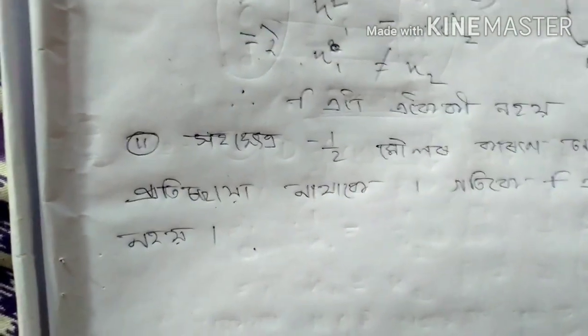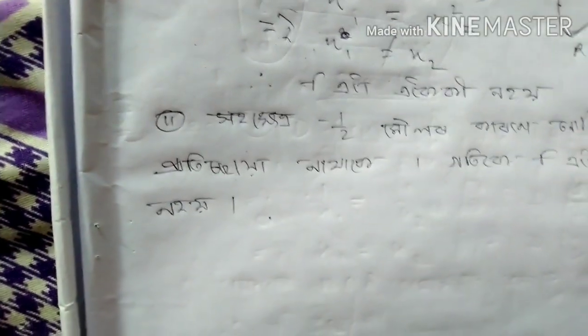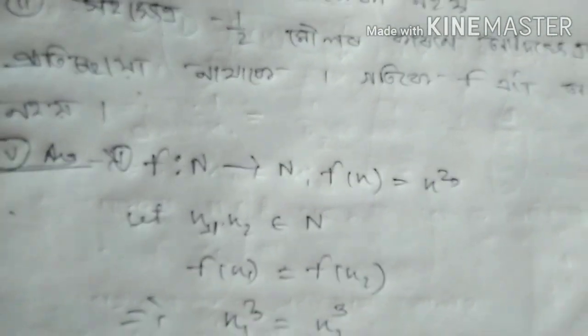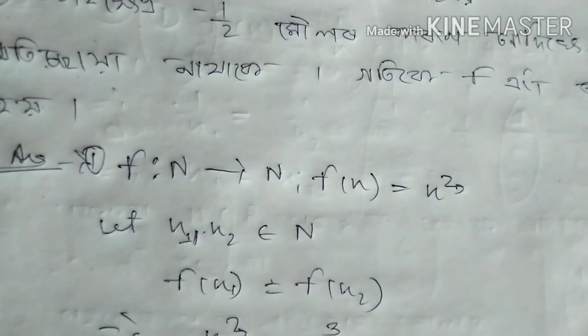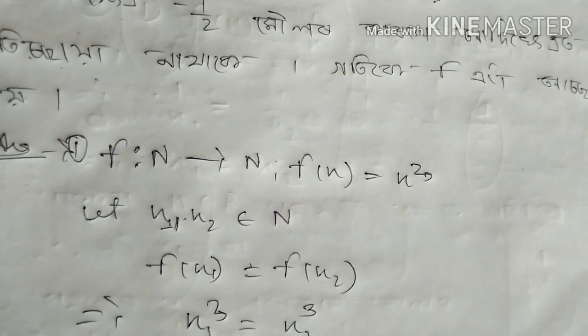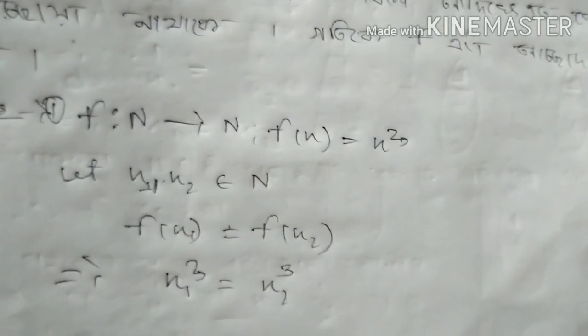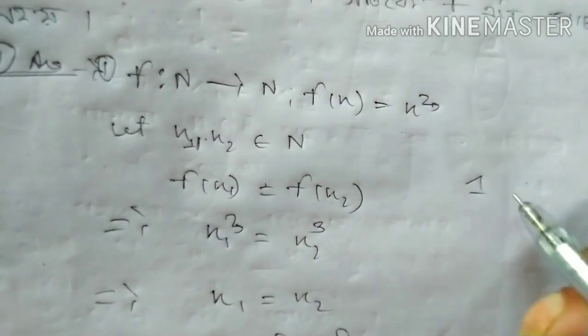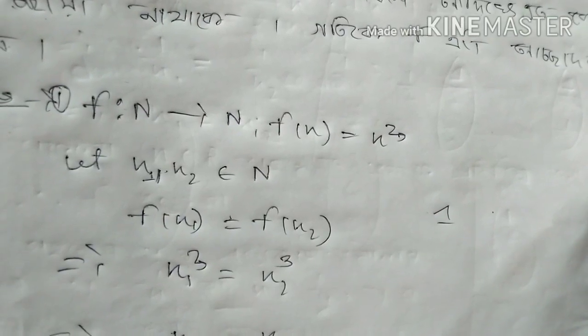We are talking about the image. f of n to n — the function is f of x is equal to x cubed. Let x1, x2 belong to n. If f of x1 equals f of x2, then x1 equals x2.